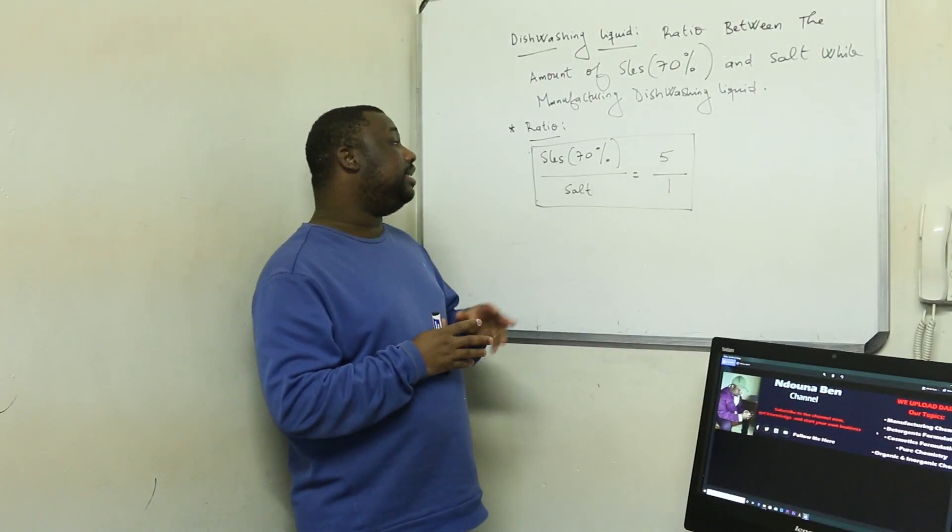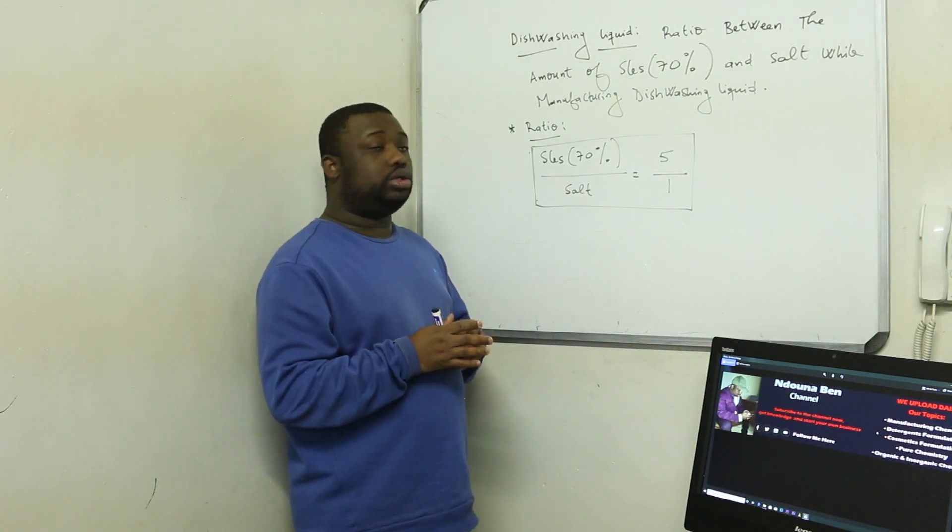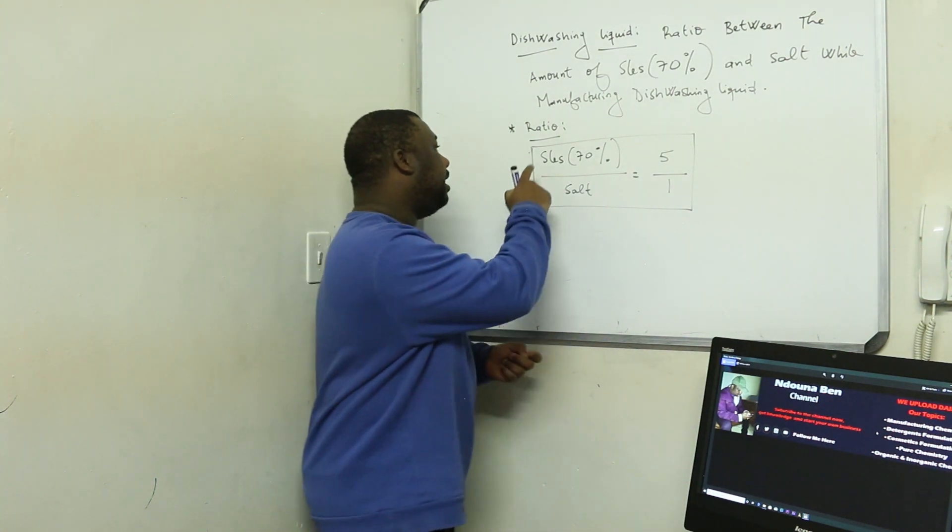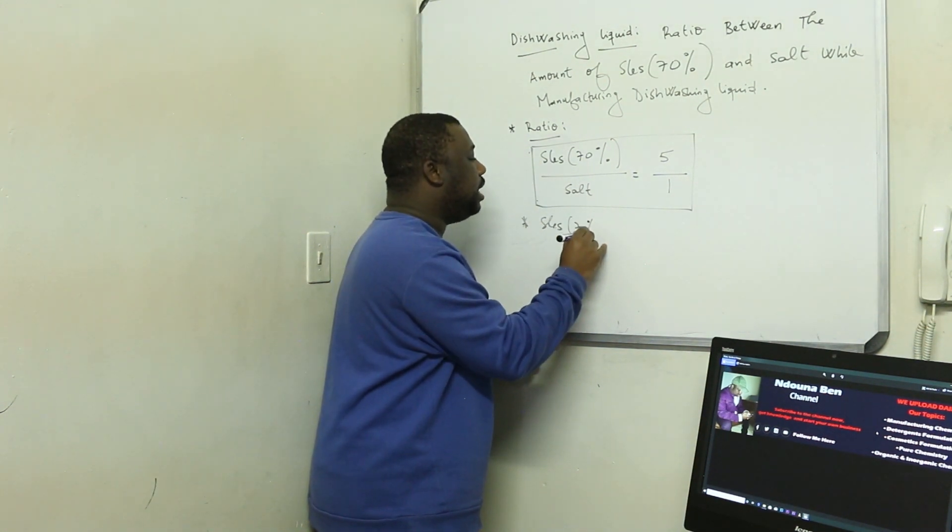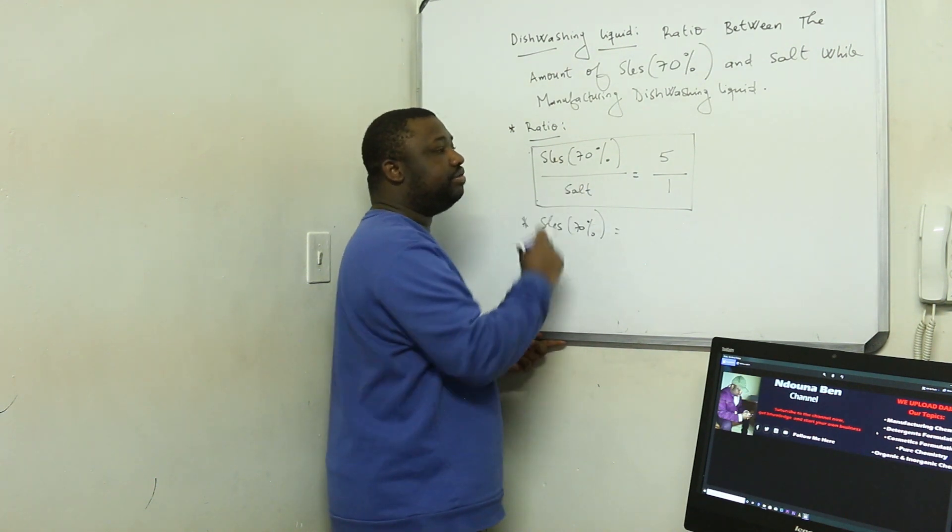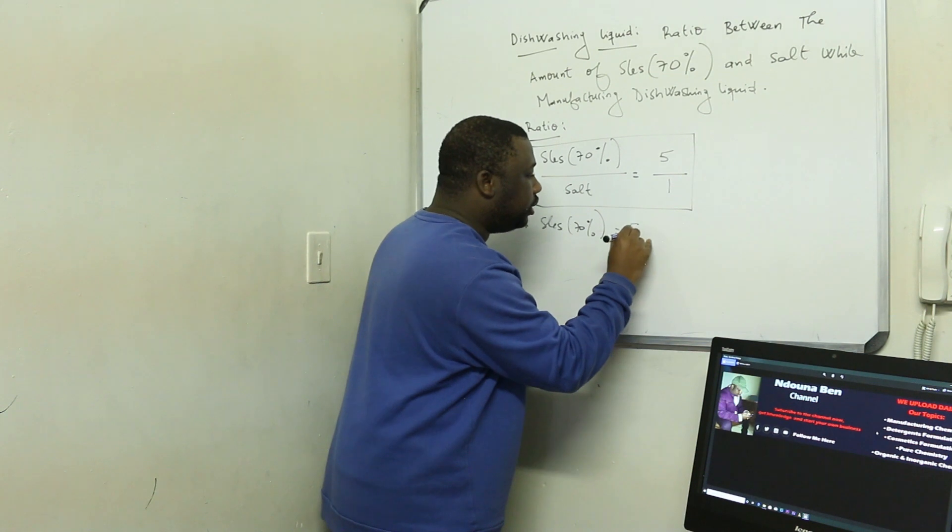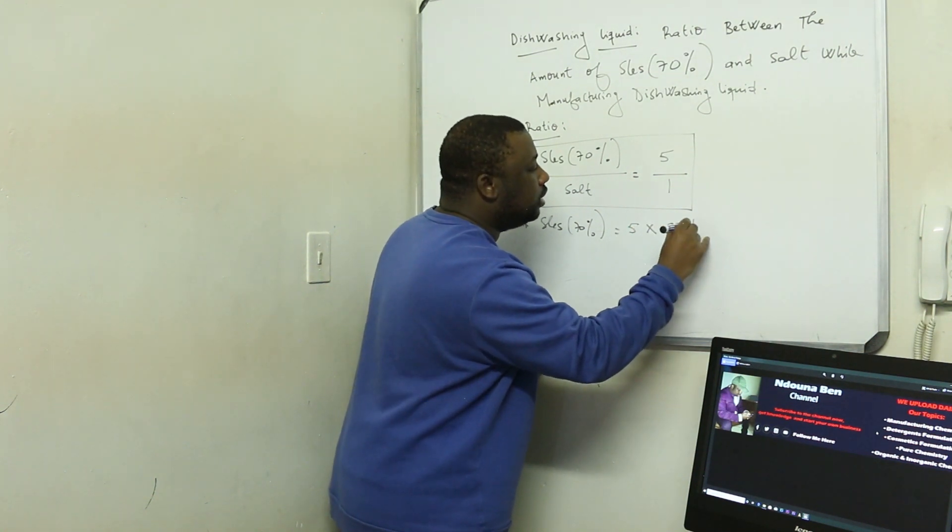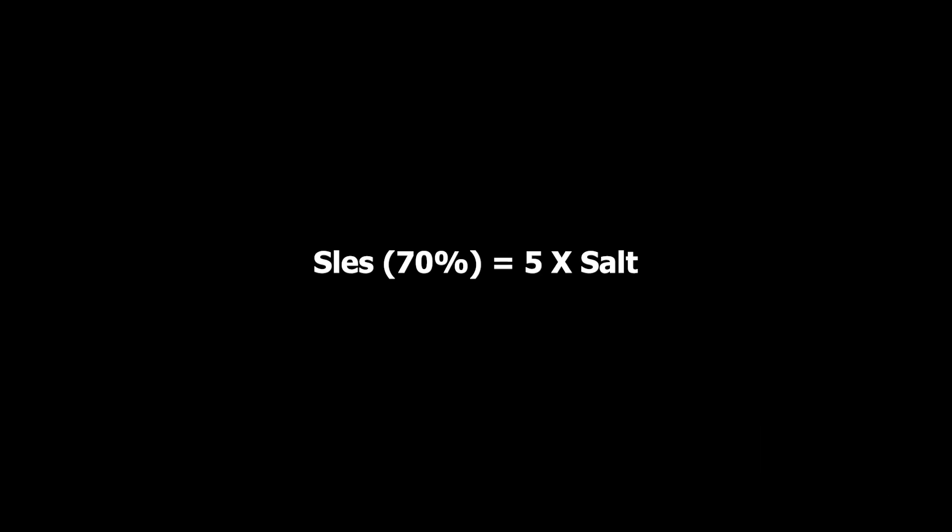Let's say if you need to find the amount of SLES knowing the amount of salt. What do you do? We make SLES the subject of the formula. It means that the amount of SLES will be five times salt divided by one—we can just say five times salt. What is the meaning of this? Knowing the amount of salt, if you want to find the amount of SLES, you have to multiply the amount of salt times five.